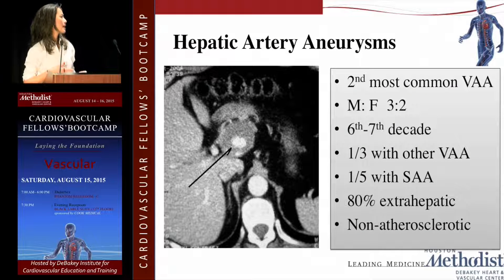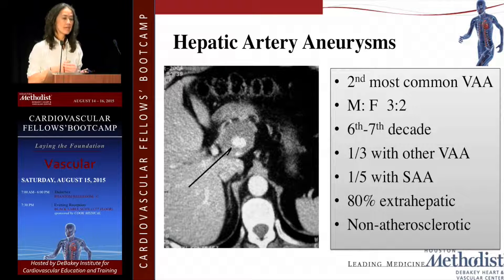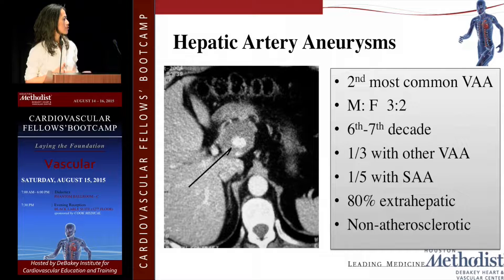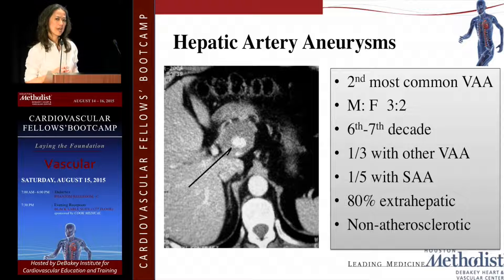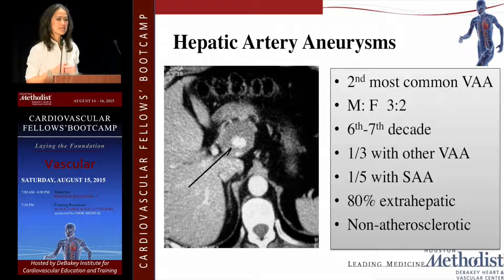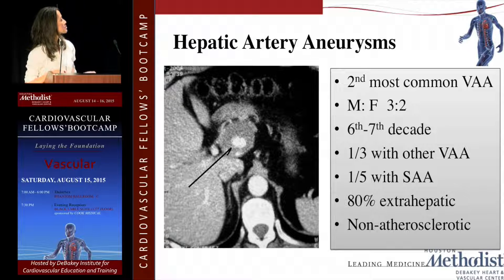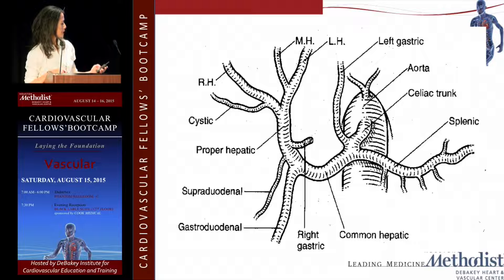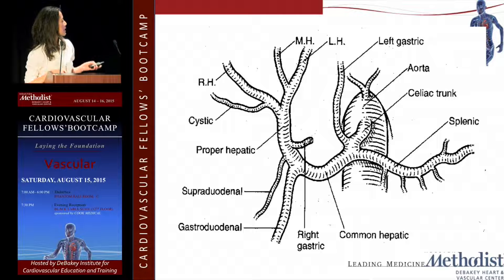Hepatic artery aneurysm is the second most common type of visceral artery aneurysm. It happens more in men than women and tends to occur in older patients. About a third are associated with other visceral artery aneurysms. Eighty percent of these are extrahepatic; the rest can be intrahepatic. Most are non-atherosclerotic in nature. This diagram shows the anatomy of the common hepatic artery — you have lots of collaterals. This is the common hepatic artery and this is the hepatic artery proper.